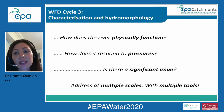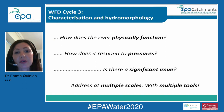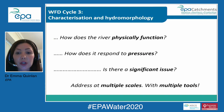Hydromorphological status is only considered for high status sites and water bodies, and we use a physical habitat assessment called RAT to address that. For characterization and hydromorphology we are considering all water bodies and asking questions like: how does the river physically function, how does it respond to pressures, is there a significant issue? We address these questions at multiple scales, and coming into cycle three we now have assessment tools to address these questions at multiple scales.